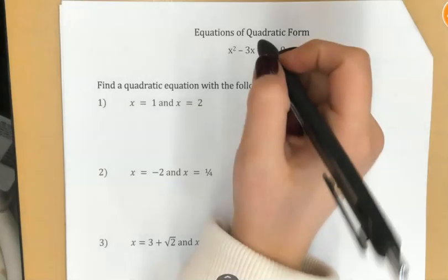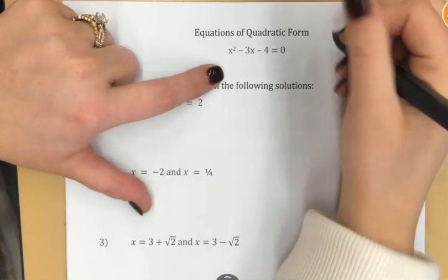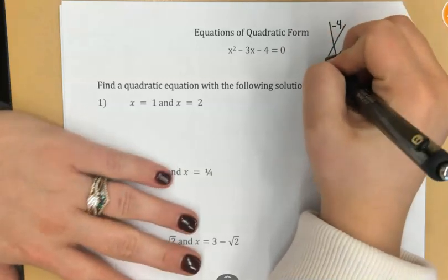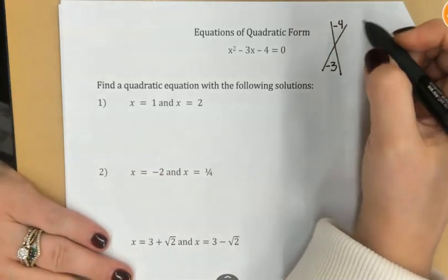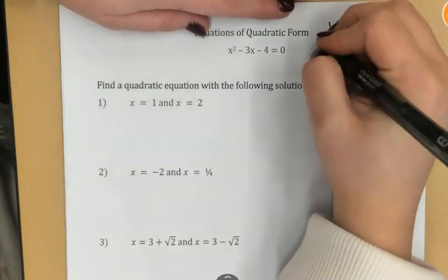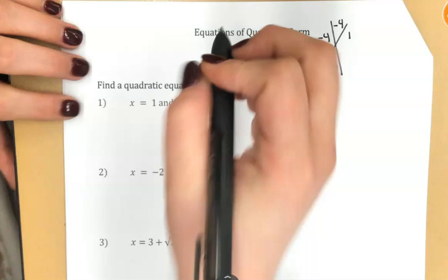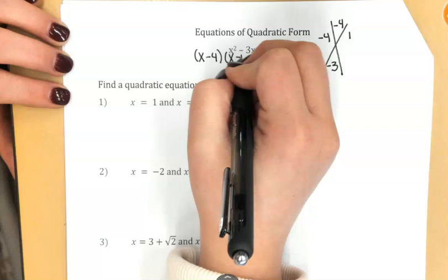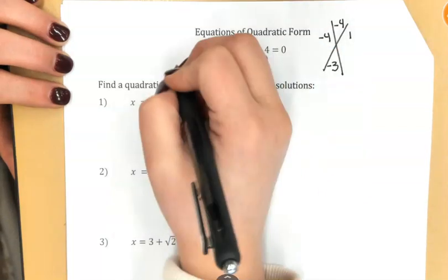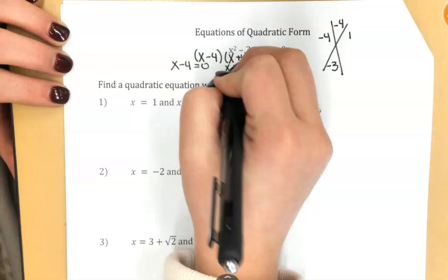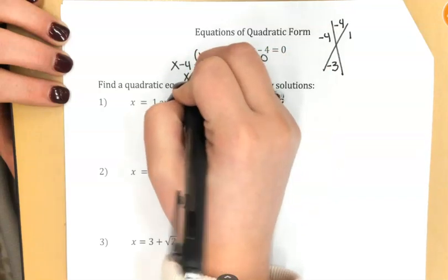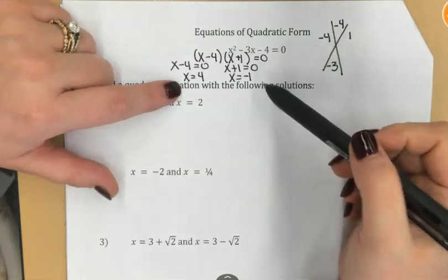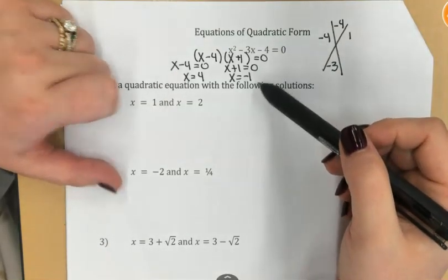So if you think about this quadratic, if we were to solve it with the x method, negative 4 goes on top, negative 3 goes in the bottom. I'm looking for two numbers that multiply to negative 4 and add to negative 3. That's negative 4 and positive 1. So my factors end up being x minus 4 and x plus 1. And after I solve that out, my two solutions end up having the opposite sign of the one I started with. Negative 4 and positive 1 gives me solutions 4 and negative 1.